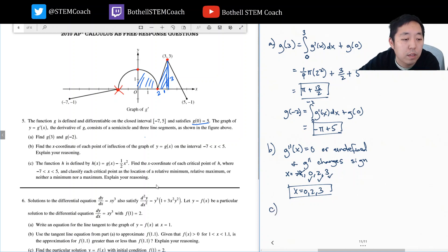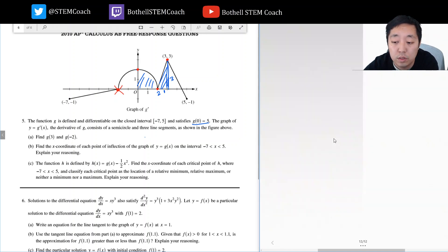Part C: The function h is defined by h of x equals g of x minus one half x squared. Find the x coordinate of each critical point of h and classify each as a relative min or max. I have h of x is g of x minus one half x squared. I want to consider when I have a critical point. Critical point is when h prime of x equals zero. The derivative of h of x is g prime of x minus x equals zero. So I want g prime of x to equal x.